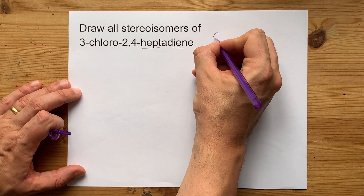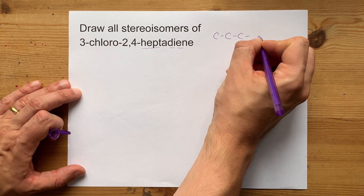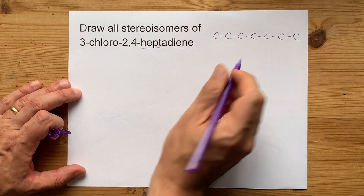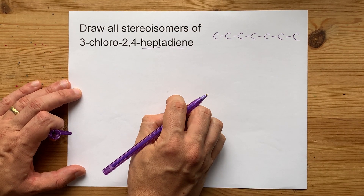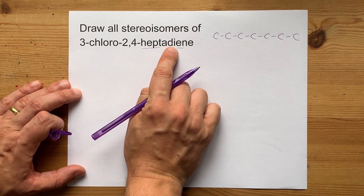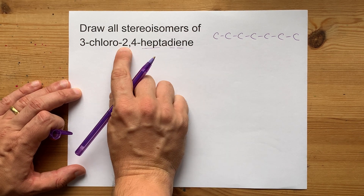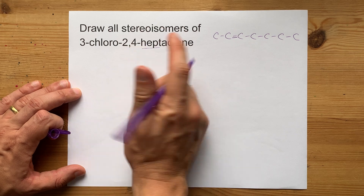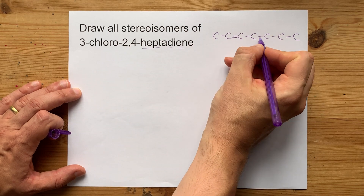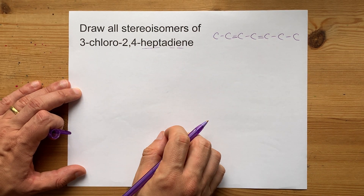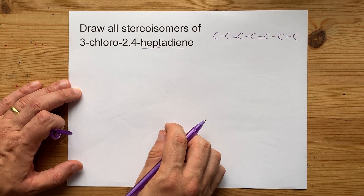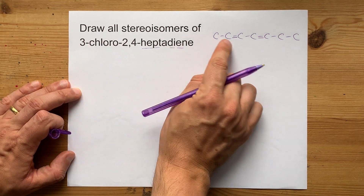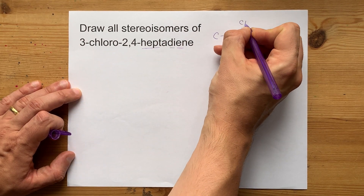I'm going to give myself a rough sketch here — seven carbons in a row, with a double bond from carbons 2 to 3 and from 4 to 5. And then we have a chlorine on carbon 3 itself.